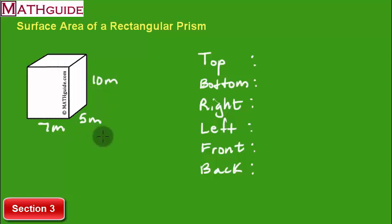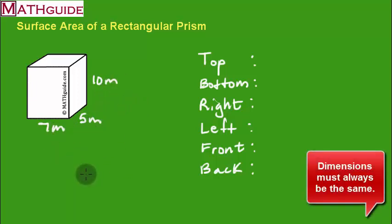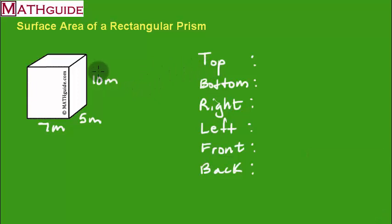Alright, so we have another rectangular prism here, and we have three different units. Our last problem was in feet. These are all in meters. And of course, yes, all our dimensions do have to match. They all have to be the same. Okay, now I left the faces over here on the right side. And so now we're just going to calculate what these areas are.